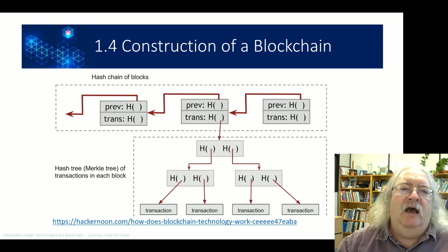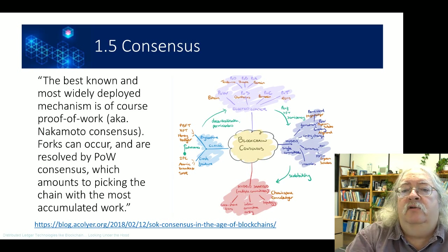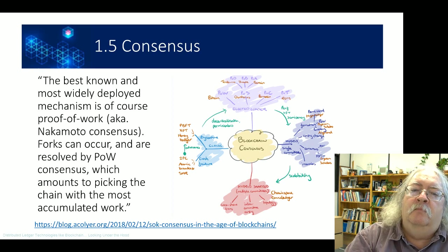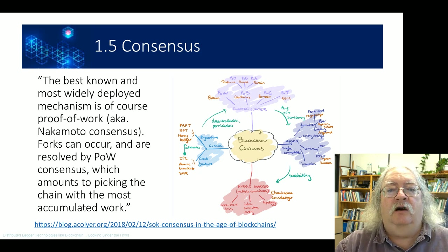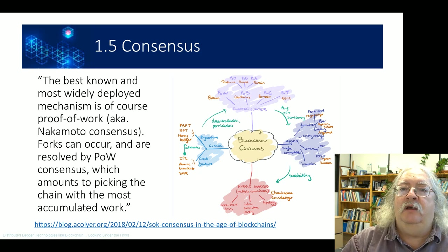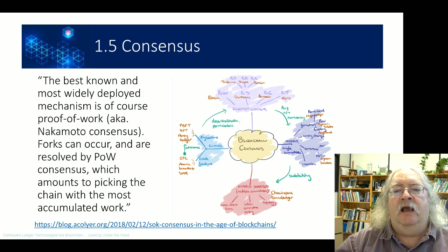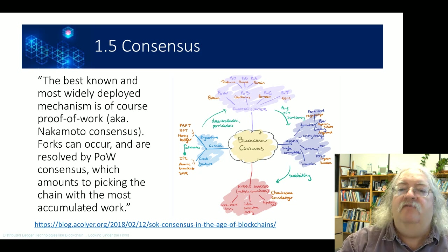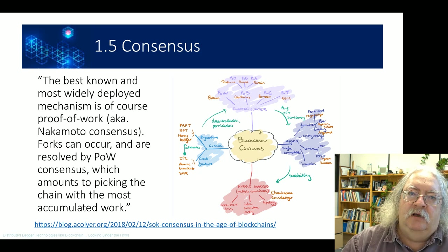If somebody comes in and changes a traditional database and isn't detected, there's no way to fix that error. In a blockchain, you have a record. Every different transaction is added; nothing ever gets changed. Consensus is what makes a blockchain more than just a fancy database. Our blockchain is distributed, which means each person in a network of participating nodes gets a copy of that blockchain, so everybody knows what the blockchain is.